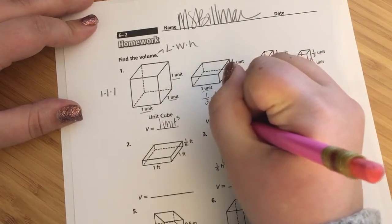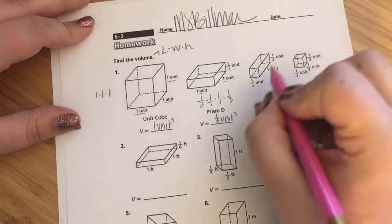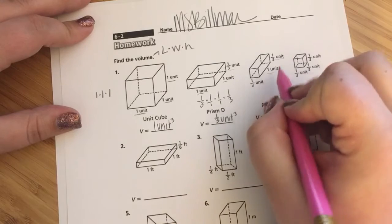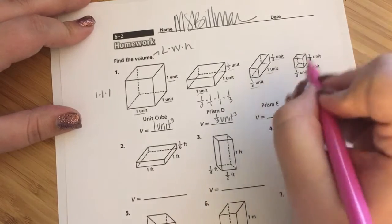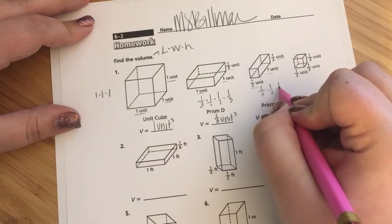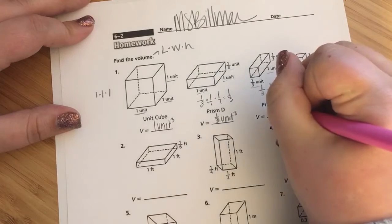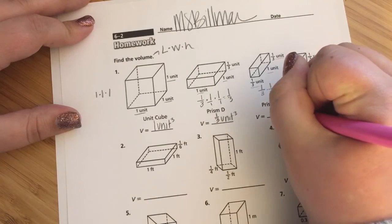This next one is 1 third multiplied by 1 third multiplied by 1. I multiply across, knowing my denominator will be 9. So, my volume is 1 ninth unit cubed.